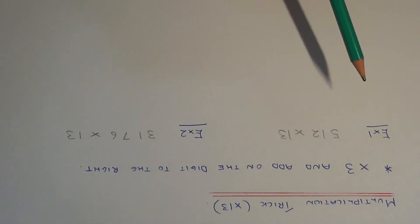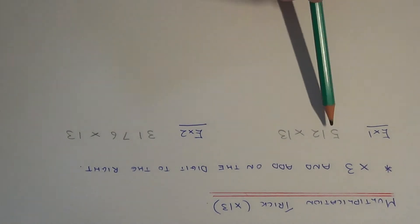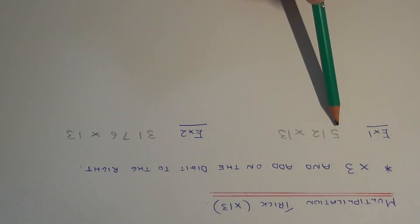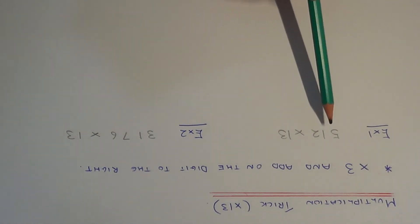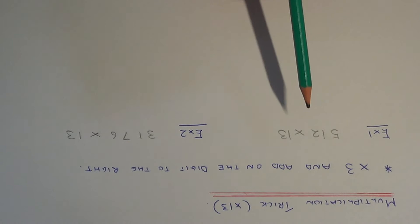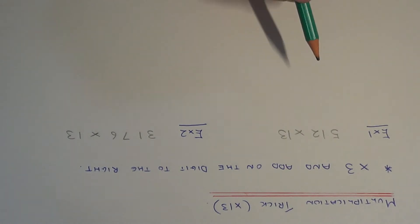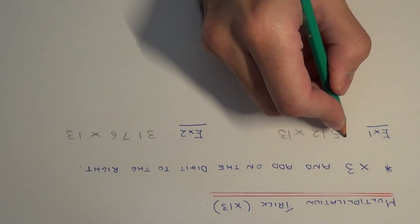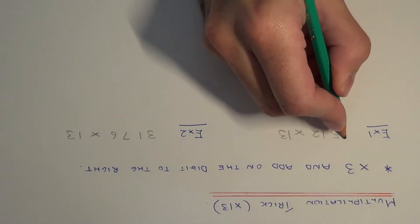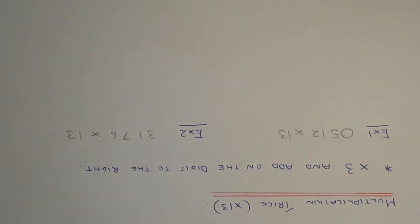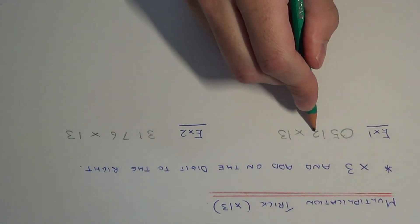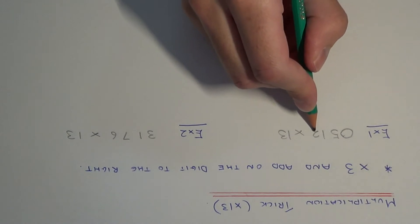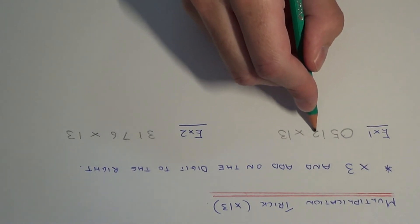So let's have a look at the two examples I've got here. Example 1: we need to multiply 512 by 13. The first thing you need to do is put a zero before the number that you're multiplying by 13. We start at the end of the number and multiply each digit by 3 and add on the number to the right.